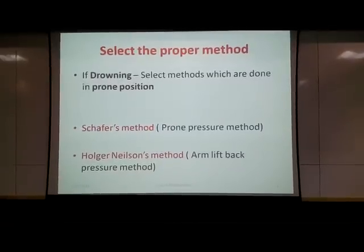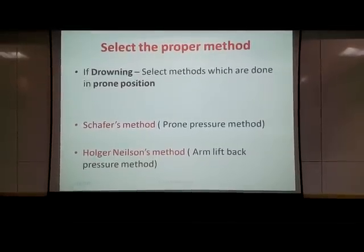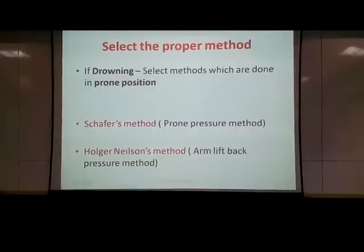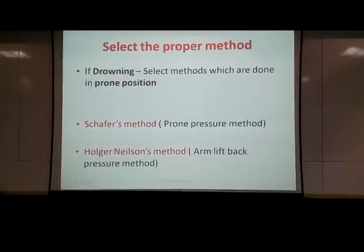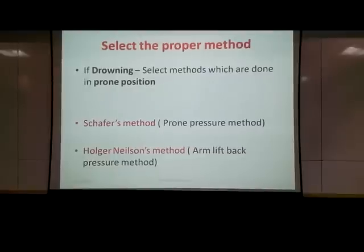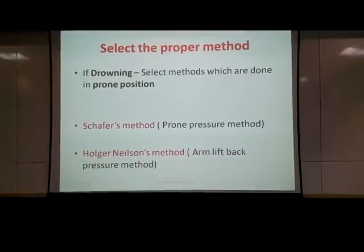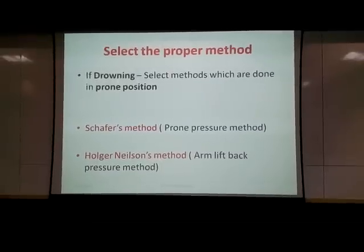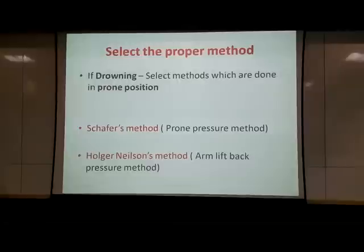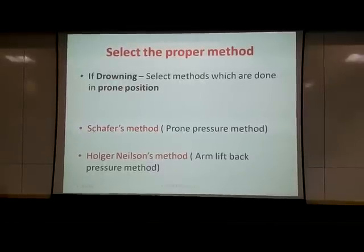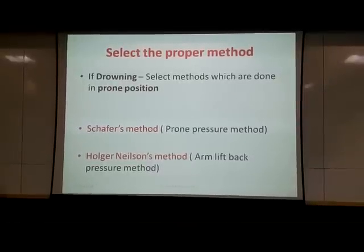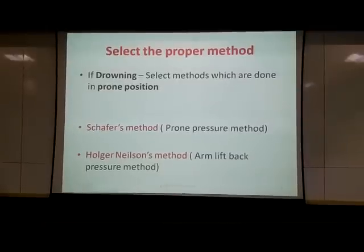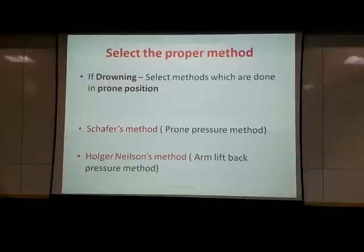When you go for artificial respiration, you must select a proper method. For example, in a drowning case the method should be in the prone position, meaning the patient lies on the abdomen. There are two main methods: in prone position, muscular respiration — the Schaffer method, also called the prone pressure method — and the Holger Nelson method, called the arm lift back pressure method.